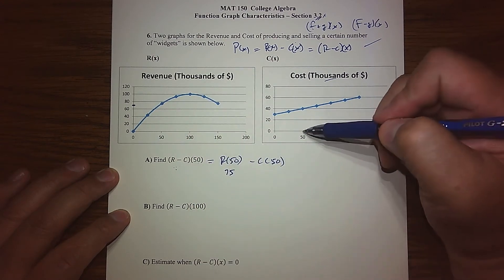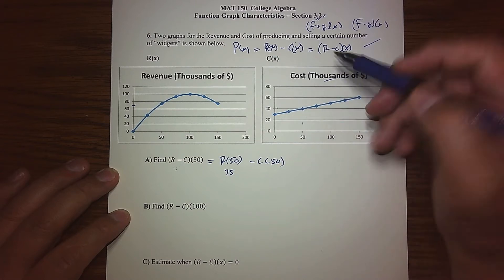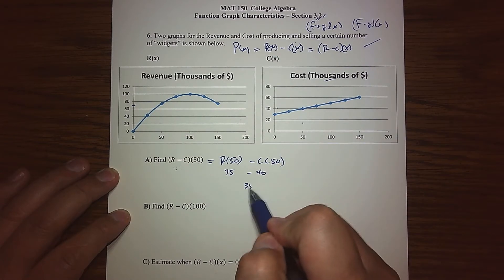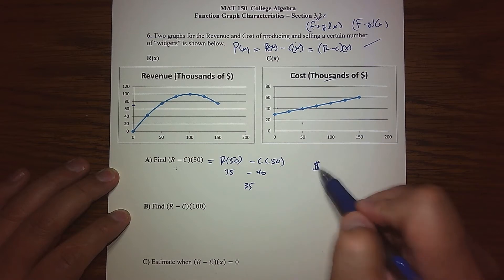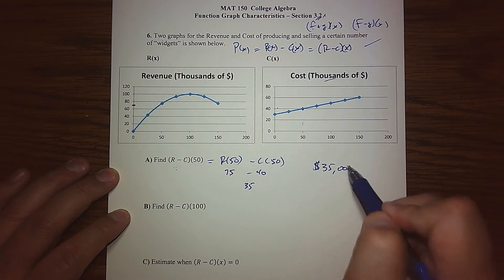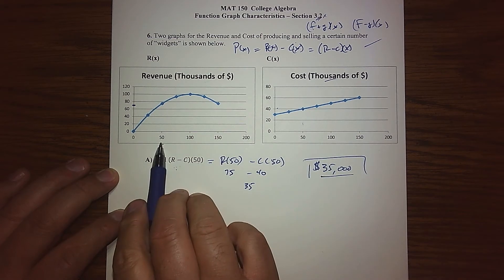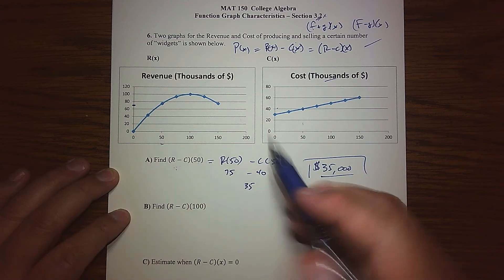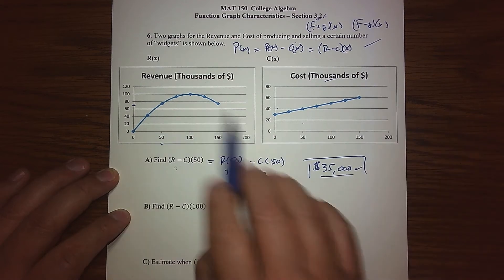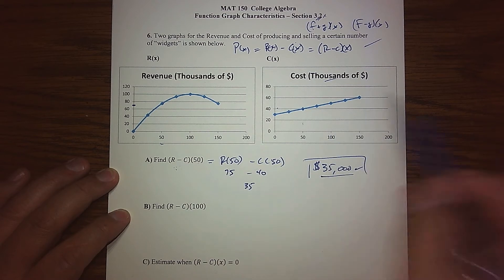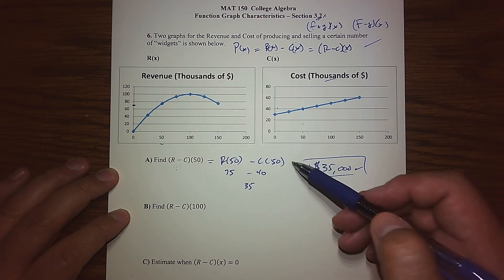C(50), when I come up here, looks like it's right on 40. When I put this together it looks like 35. So if my company produces 50 widgets, I expect to have a profit of $35,000 based on the data I have for revenue and cost.